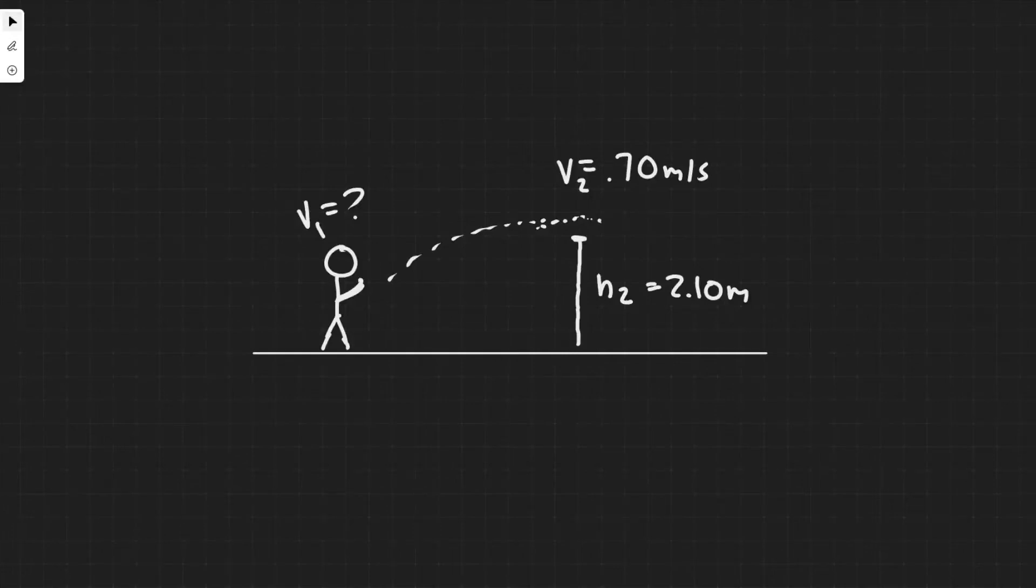So, in this problem we're told in the high jump, the kinetic energy of an athlete is transformed into gravitational potential energy without the aid of a pull. With what minimum speed must the athlete leave the ground in order to lift his center of mass 2.1 meters and cross the bar with a speed of 0.7 meters per second?